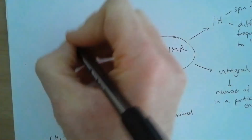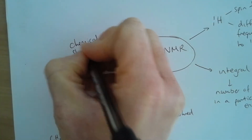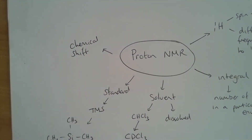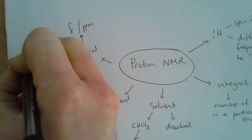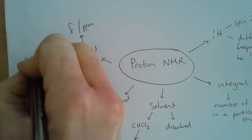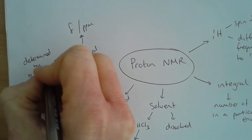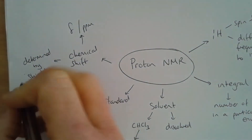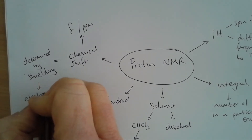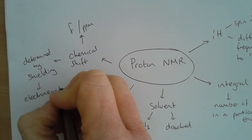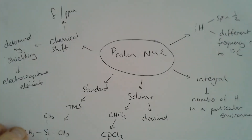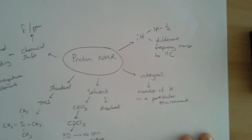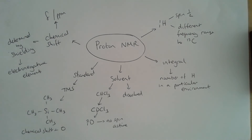We'll also be talking about chemical shift — we'll do a whole dedicated video on that. Chemical shift is measured in parts per million and is determined by the amount of shielding around particular hydrogen atoms, which is itself determined by the proximity to electronegative elements. Let's now have a look at some specific examples.